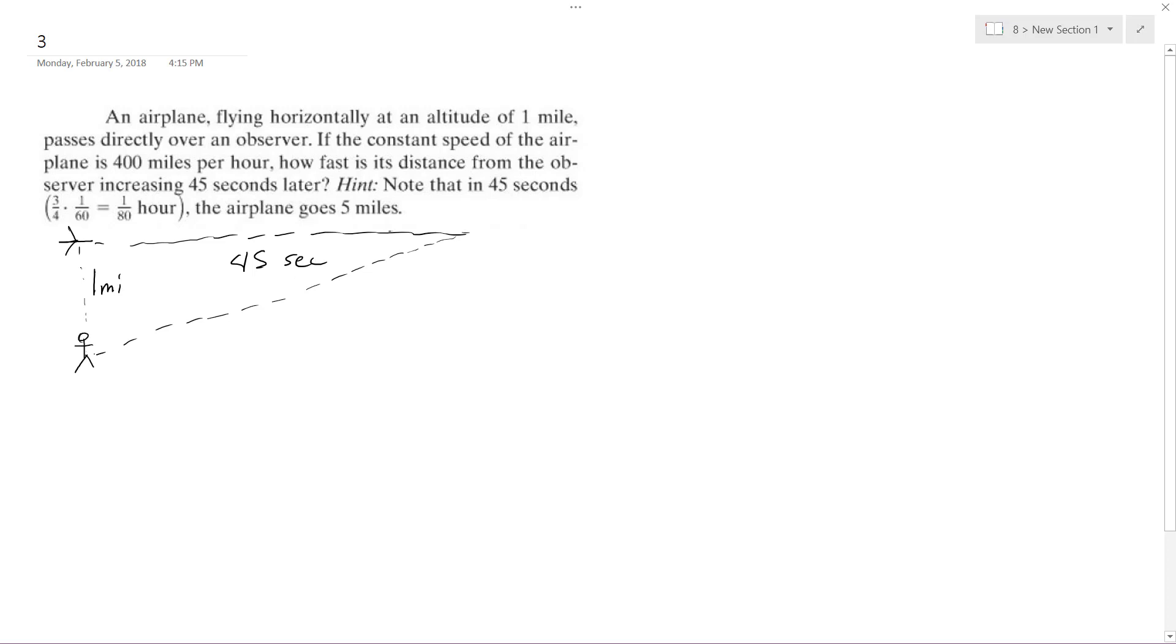So the airplane goes, in 45 seconds, they're helping you out there, five miles. Five miles horizontally, but I think the key difference here is we're going to work on the hypotenuse portion here. So how fast does the airplane go at that point?